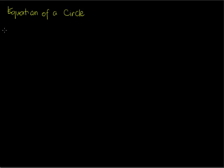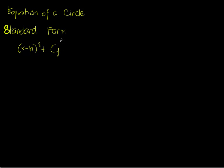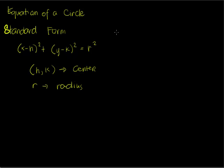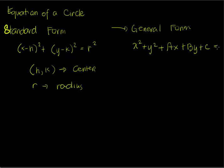Today, we're going to learn how to transform a standard form of equation of a circle to its general form. The standard form of equation of a circle is x minus h squared plus y minus k squared equals r squared. The ordered pair h, k is the center of the circle and r is the length of the radius. The general form of the equation of a circle is x squared plus y squared plus ax plus by plus c equals zero.